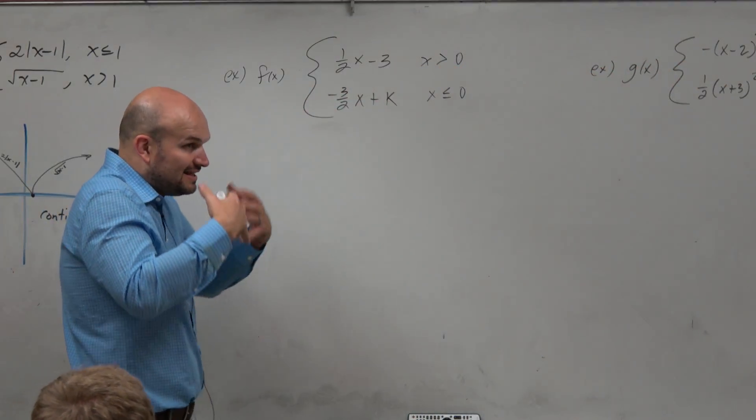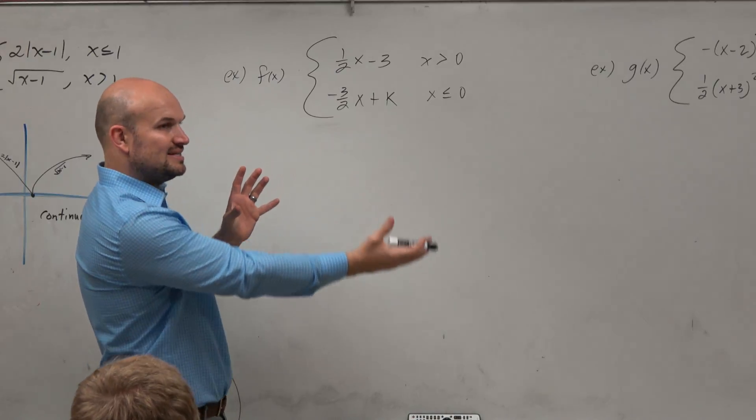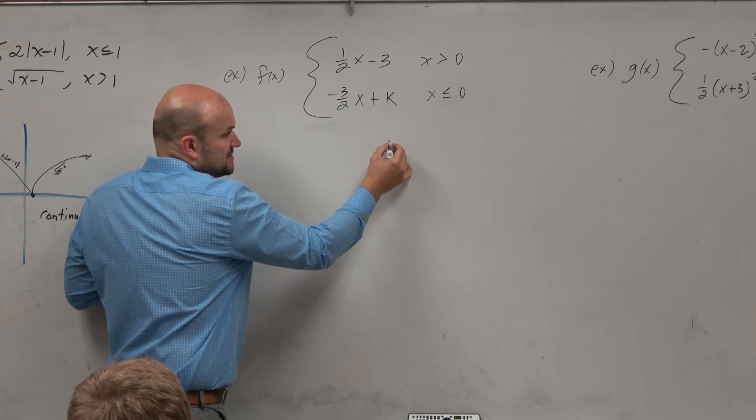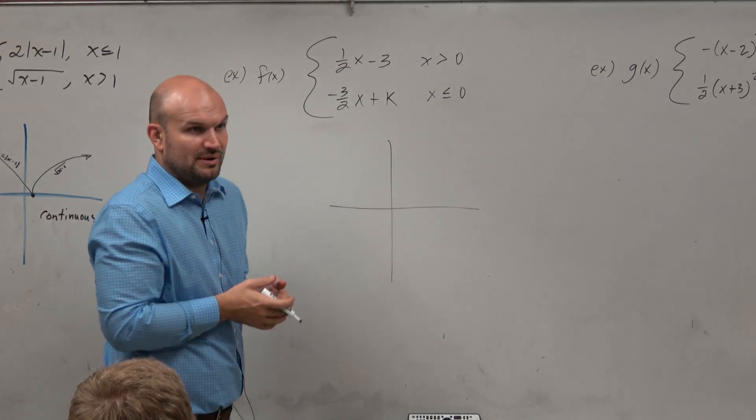First perspective is just the graphical approach. So if I want to find the value k that is going to make these continuous, based on that last example I talked with you, it might be obvious. It might not be obvious for some of you. So my recommendation to you is, well, let's graph what we know.